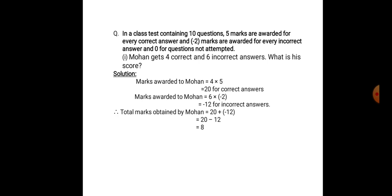Mohan gets 4 correct and 6 incorrect answers. What is his score? Marks awarded to Mohan for correct answers is equal to 4 into 5, that is equal to 20. He has got 6 incorrect answers. For every incorrect answer, minus 2 marks are given. So for 6 incorrect answers, 6 into minus 2 is equal to minus 12. The total marks obtained by Mohan is equal to 20 plus minus 12, which is 20 minus 12, equal to 8. So 8 is his final score.